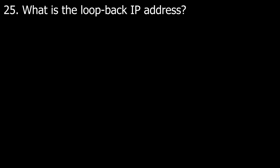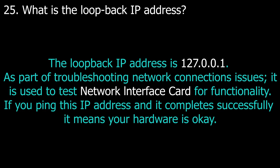Question number twenty-five: what is a loopback IP address? The loopback IP address is 127.0.0.1. As part of troubleshooting network connection issues, it is used to test network interface cards for functionality. So if you ping the IP address and it completes successfully, it means that your hardware is okay.